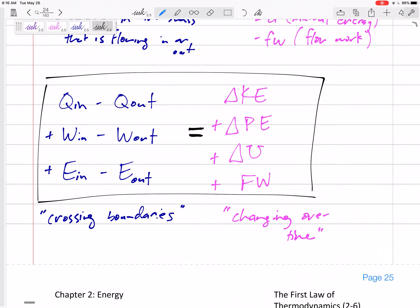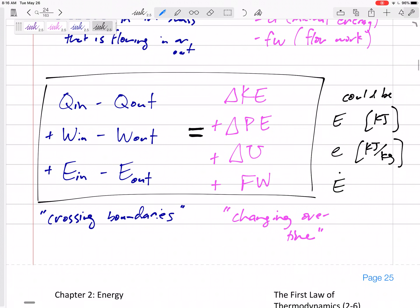Now I put all these as capital. These could be capital E, like total, and you'll know that if the units are kilojoules or joules. So this could be the total conservation of energy. But maybe all of this throughout this whole equation is lowercase, is specific. The units would be like kilojoules per kilogram.